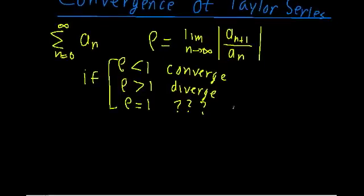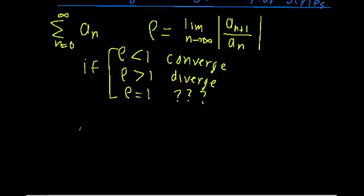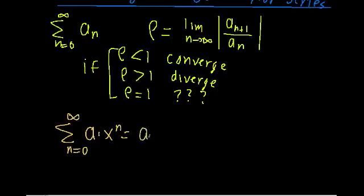So let's just use a brief example of a relatively famous series, the geometric series. The geometric series, that's just the series of, let's say, n equals zero to infinity of just a constant a times x to the n. Now that's just equal to a plus ax plus ax squared plus ax cubed and so on.